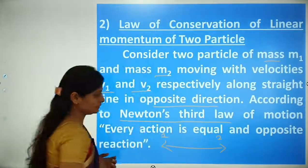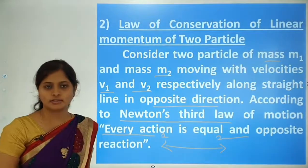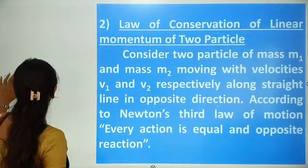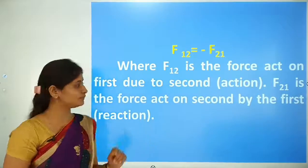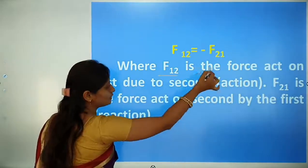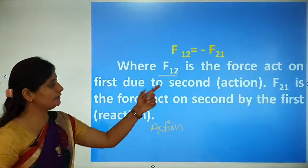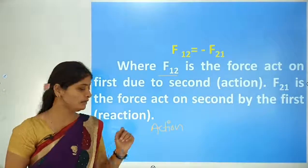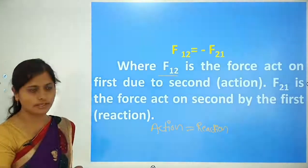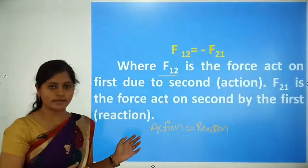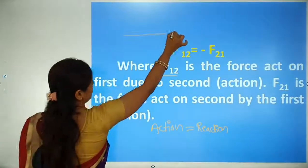We apply Newton's third law of motion: every action has an equal and opposite reaction. So F12 equals minus F21, where F12 is the force on the first particle due to the second (action), and F21 is the force on the second particle due to the first (reaction).